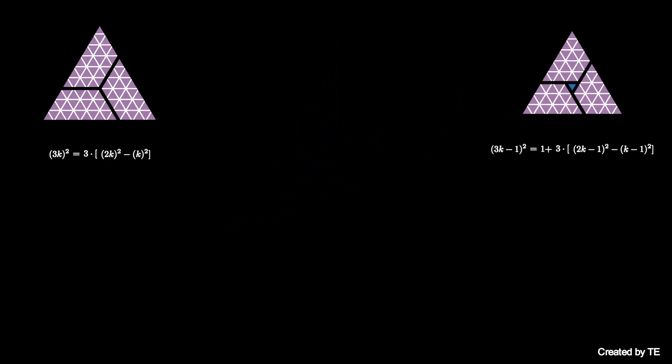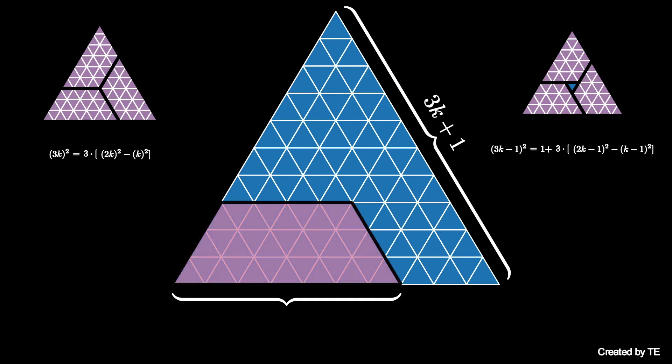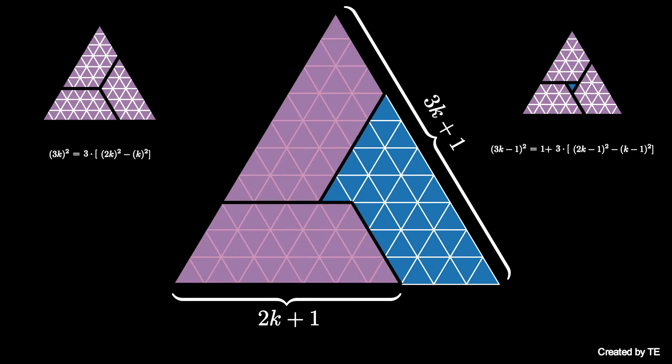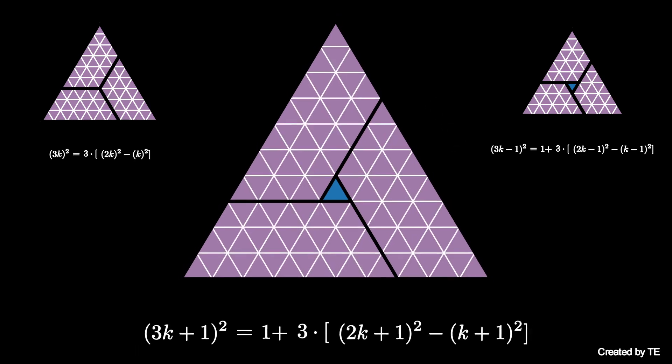Finally, if we start with a square of a number 1 more than a multiple of 3, say 3k plus 1, then we can again use three copies of a trapezoid tile, but this time the bases are 2k plus 1 and k plus 1. And again, these cover the entire triangle except for one middle triangle. Therefore, we conclude that (3k + 1)² is 1 plus 3 times the quantity (2k + 1)² minus (k + 1)², as again the trapezoid covers a difference of squares.